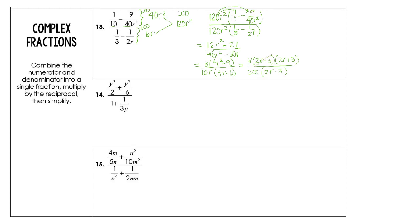Now we're ready for our final answer — hallelujah! The final answer: we have 3 times 2R plus 3 over 20R. That should be it. Let's try another one.